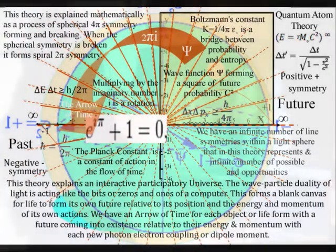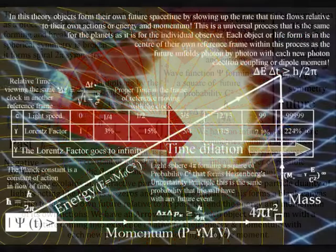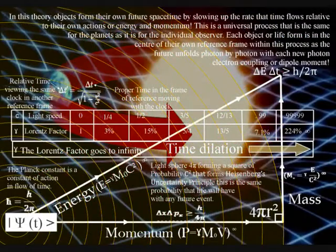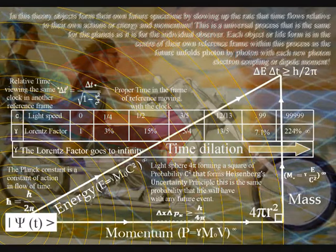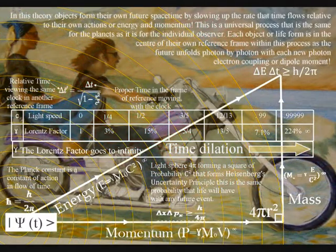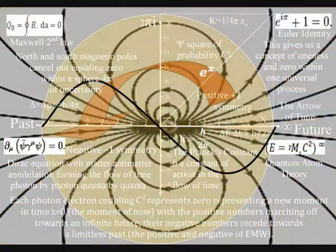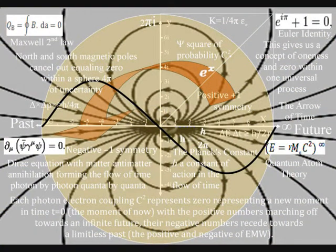The universe is a continuum, with space-time as an emergent property, with an arrow of time for each object or life form, with a future coming into existence, relative to their energy and momentum, with each new photon-electron coupling, or dipole moment.